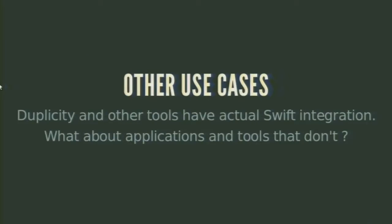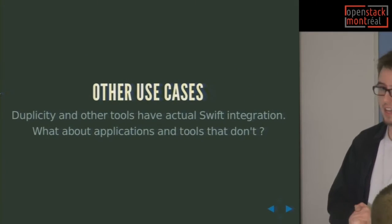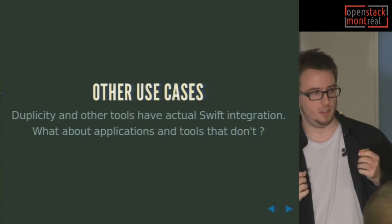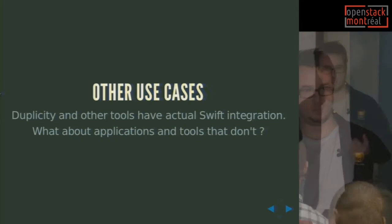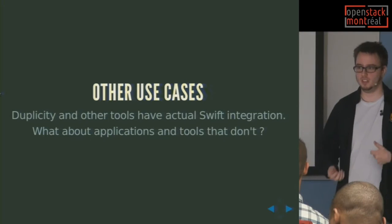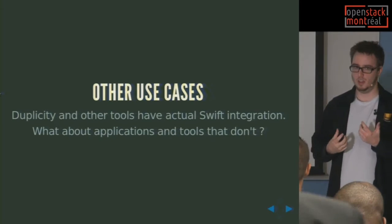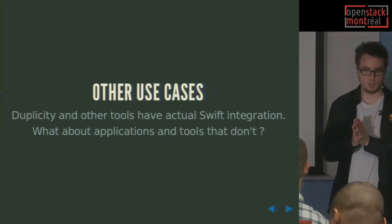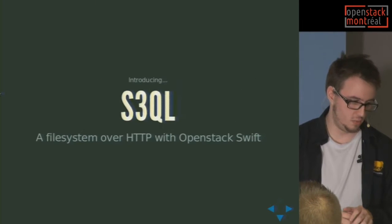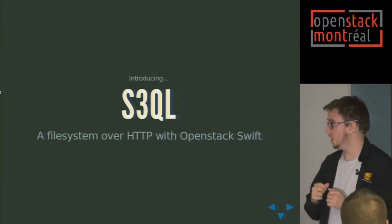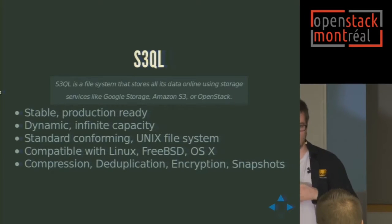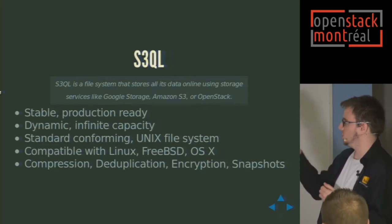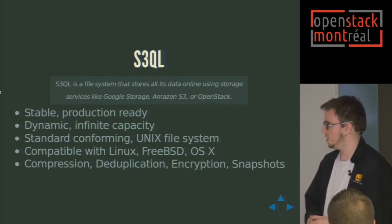Let's talk about other use cases with Swift. You have Duplicity, and there are a lot of tools out there that have native integration with Swift. But other applications and software tools may not know how to talk to Swift, so you need to find a way to abstract Swift and make it work. That's why there's a project called S3QL. S3QL — I call it the filesystem over HTTP with OpenStack Swift. OpenStack Swift is just one of the backends for S3QL; you also have Google Storage and Amazon S3.